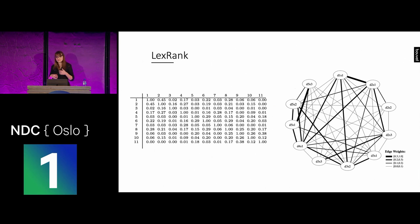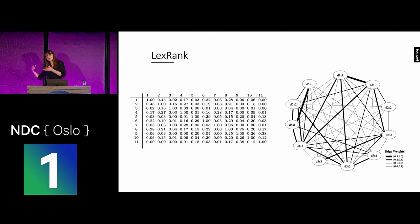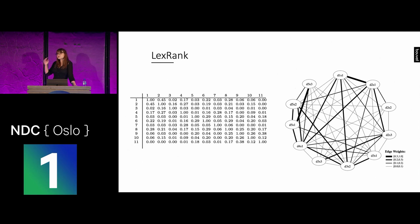This approach sounds a lot like the PageRank algorithm used by Google, and it is working on the same principle. There is also another very similar method called TextRank, working more or less the same way — two different methods created at approximately the same time by two different groups. The small differences are that TextRank is used mostly for single-document summarization, while LexRank is used mostly for multi-document summarization, and the similarity metrics used for the similarity matrix are slightly different. But in the end, it is the same approach and the same formula.